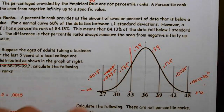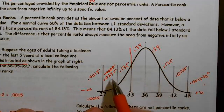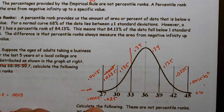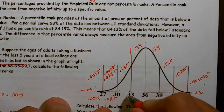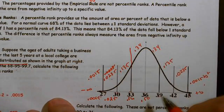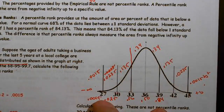Now for percentile ranks: at negative three standard deviations the percentile rank is 0.0015 (about 0.15%). Adding 0.0235 brings us to 0.025, or 2.5th percentile at negative two. Adding 0.135 to that gives 16th percentile at negative one. The mean is the 50th percentile. Adding 34% to that gives the 84th percentile at plus one standard deviation. Adding 13.5% more gives the 97.5th percentile at plus two standard deviations.